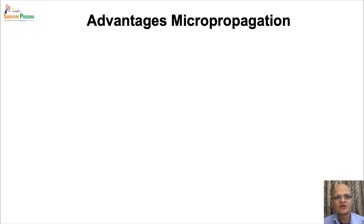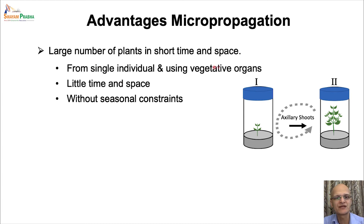Starting from a single individual or a vegetative organ using a small amount of biological starting material, thousands or millions of plants can be produced through the micropropagation process. Starting with a single organ or tissue multiplied in aseptic conditions, these individuals can be used to initiate the multiplication cycle again, producing more shootlets. This cycle of multiplication can be repeated several times, resulting in the production of a large number of plantlets.